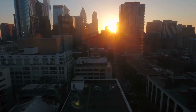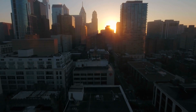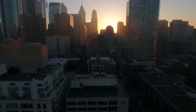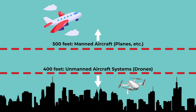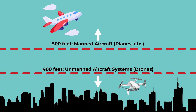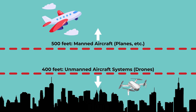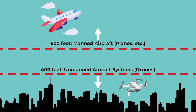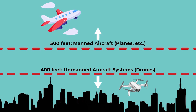Drones must fly below 400 feet above the ground unless you're near a structure like a building — you can fly up to 400 feet above the structure, but be aware of the airspace and watch for other aircraft. You can think of the sky like an elevator: drones have their own floor, and planes and helicopters are on the higher floors, so stay on your level to avoid collisions.